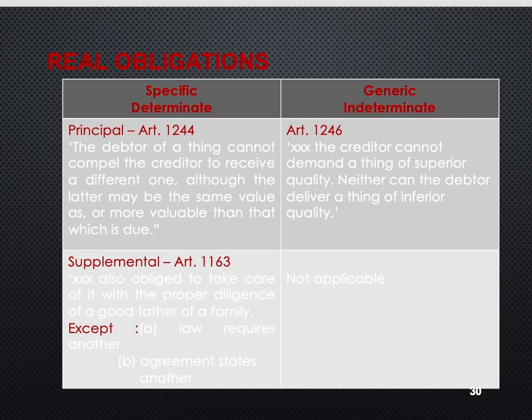In generic indeterminate obligations, the creditor cannot demand a thing of superior quality, and neither can the debtor deliver a thing of inferior quality. For example, the agreement was that X would give an iPhone 13 to Y. Whatever color it is, if X gives an iPhone 13 to Y, then the obligation would be deemed as met.